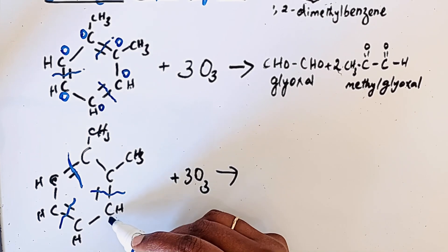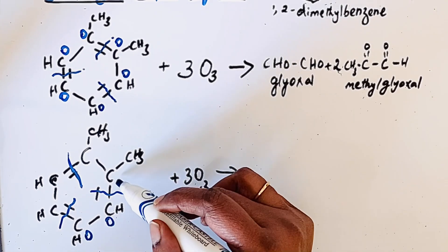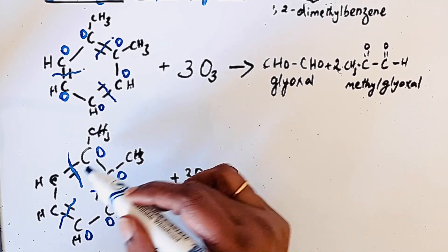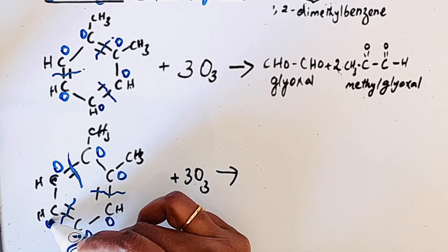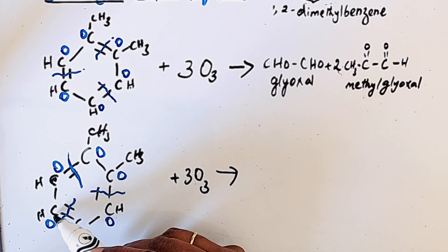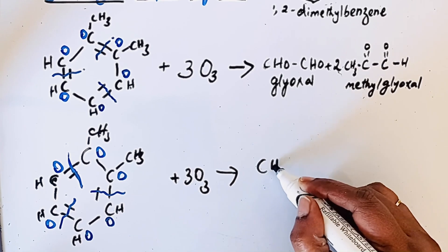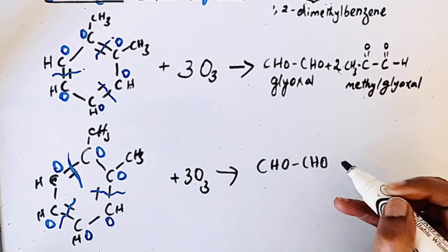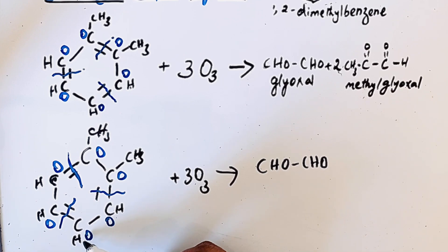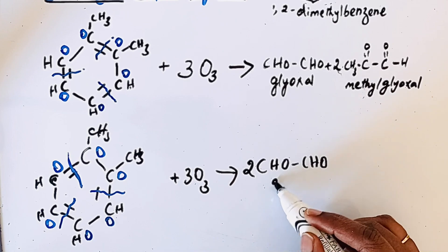Oxygen atoms are added at the cleavage sites — one oxygen here, one oxygen here, one oxygen here, and one oxygen here. From this resonance structure we get CHO-CHO, which is glyoxal, and similarly another molecule of CHO-CHO, giving two molecules of glyoxal.